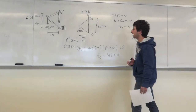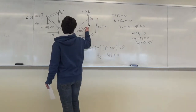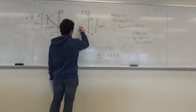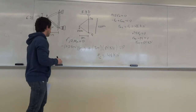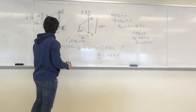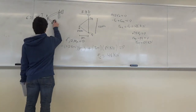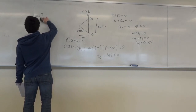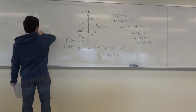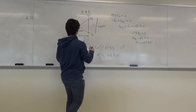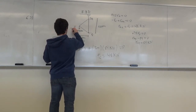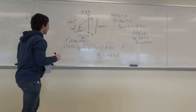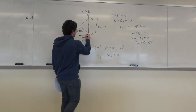They want to know the forces in each member, so we're going to use the method of joints. We draw a free body diagram of each joint to determine the forces on the members, because these are two-force members. I'll copy these dimensions onto the free body diagram: this distance is 4 meters, and this distance is 1.25 meters.